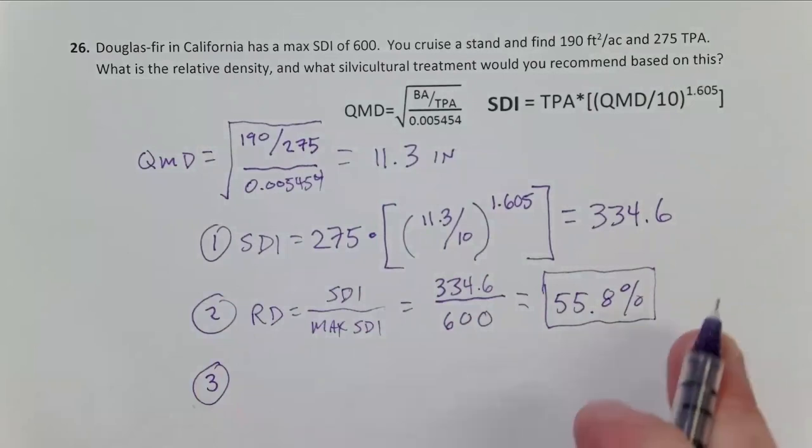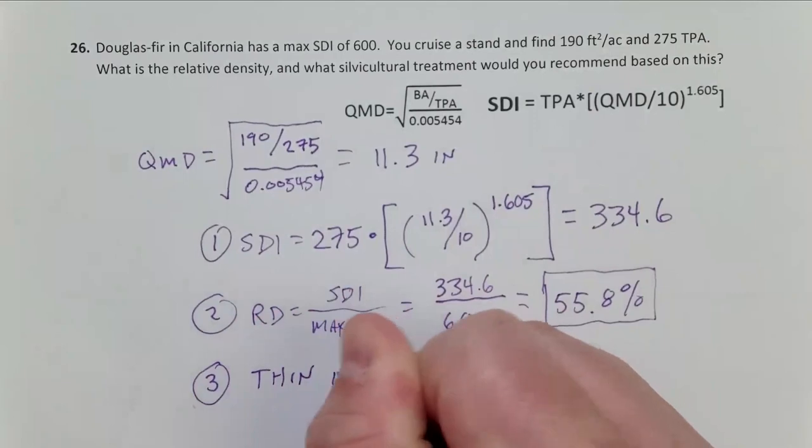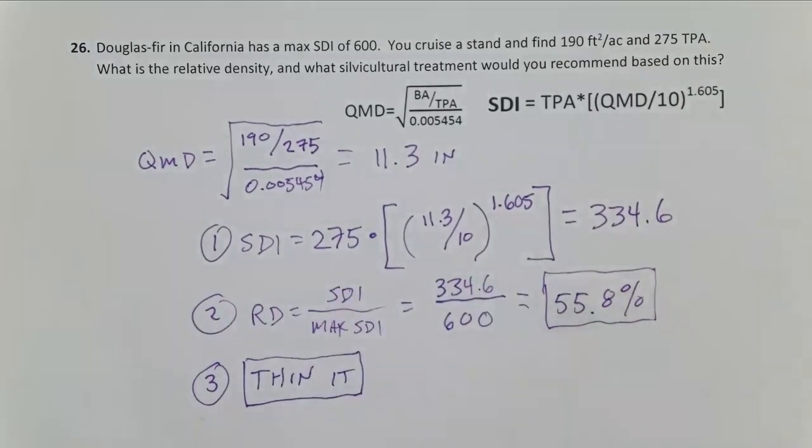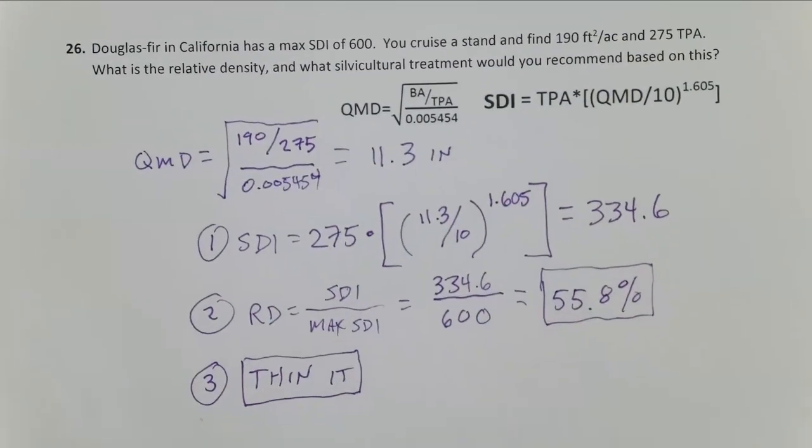So step three, interpret that number. That's suggesting that your stand is just about to, if it hasn't already, start self-thinning itself, so thin it so it doesn't have mortality. So that's another problem out of the South, focusing on calculating relative density and interpreting it to determine a thinning recommendation.